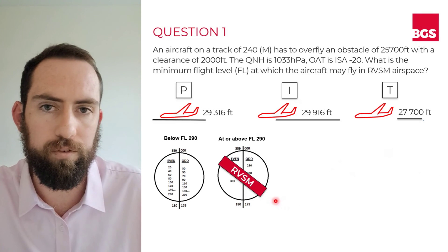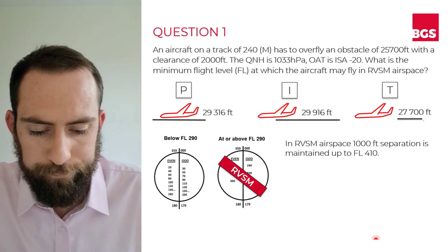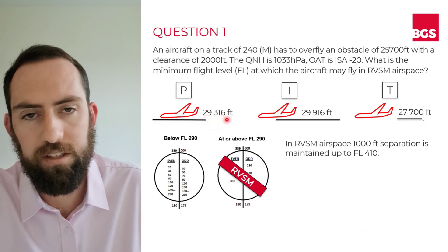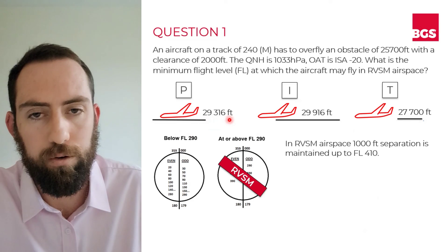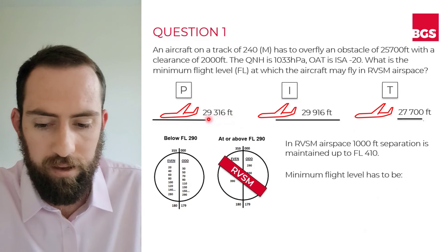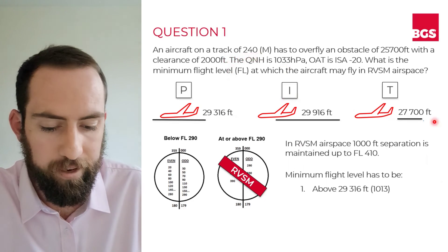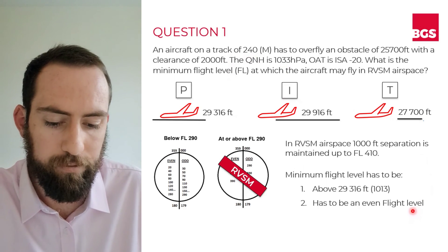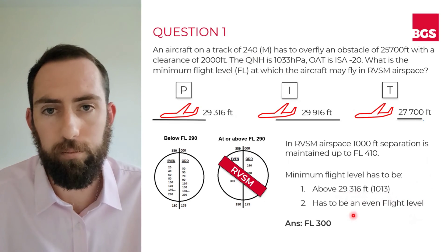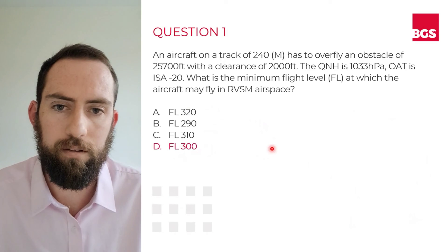We had figured out that our altimeter would have to be showing 29,316 feet with 1013 set in order for us to clear the top of the obstacle with 2,000 feet. So we have to be at a flight level above this figure. Our aircraft is flying on a track of 240 magnetic, so we also have to be at an even flight level. The next available even flight level above 29,316 feet would be flight level 300. Going back to our available answers, answer D would be the correct answer in this scenario.